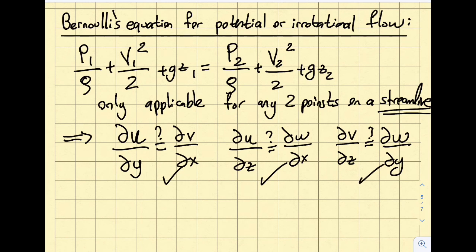If all these three are satisfied, then my flow is irrotational or potential flow. As I mentioned before, for a 2D flow where u and v are present and w is zero, you simply need to look at this equation. The other two are automatically satisfied.